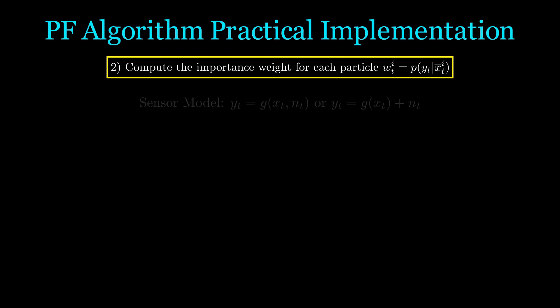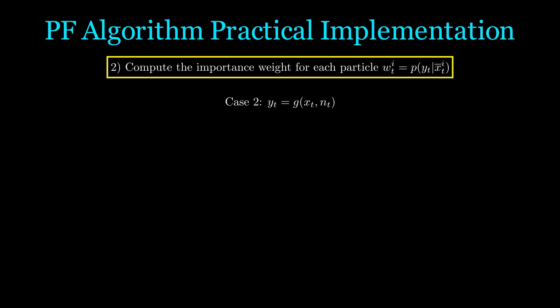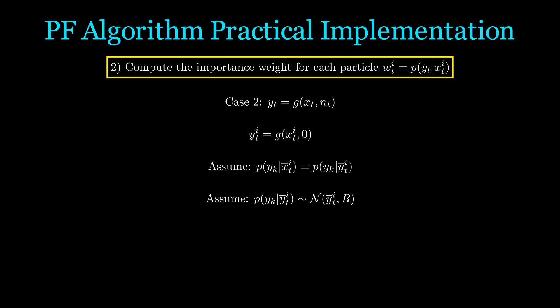The next subtlety is computing the importance weight. Remember the two different sensor models? For additive Gaussian noise, we have an analytical form of the distribution, so we can directly compute p of y_t given x_t. In the second case, we simulate a sensor reading with a particle, then assume that p of y given x is the same as p of y given our simulated sensor reading. We then further assume the sensor reading distribution — typically a Gaussian is used — because if we actually had additive Gaussian noise in our sensor model, case 2 reduces to case 1.